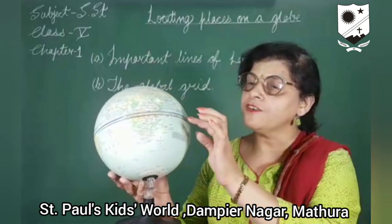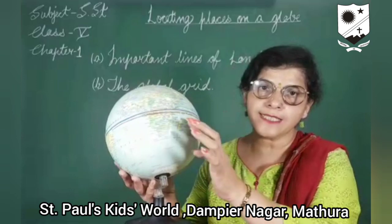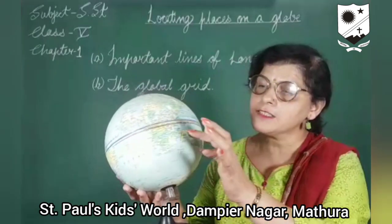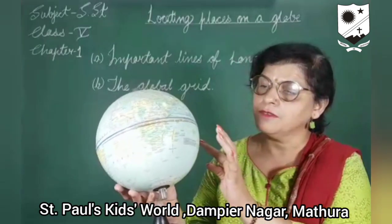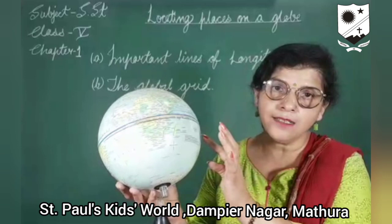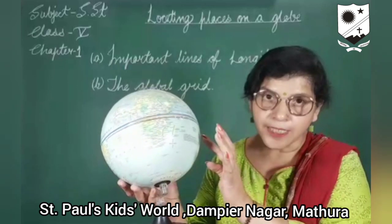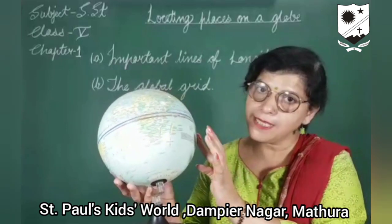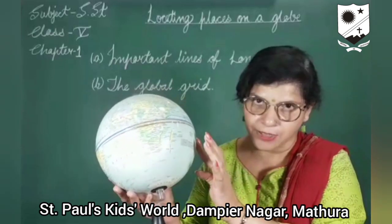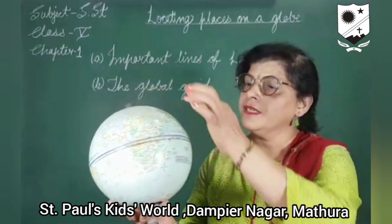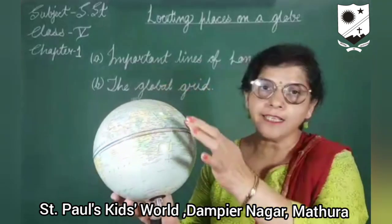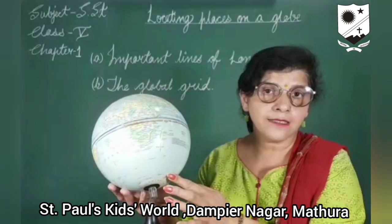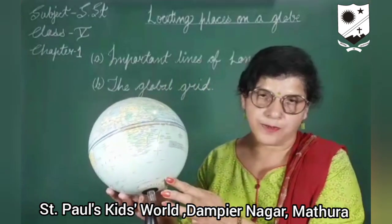The blue one is the equator. The horizontal lines are known as latitudes. The vertical lines are known as longitudes.